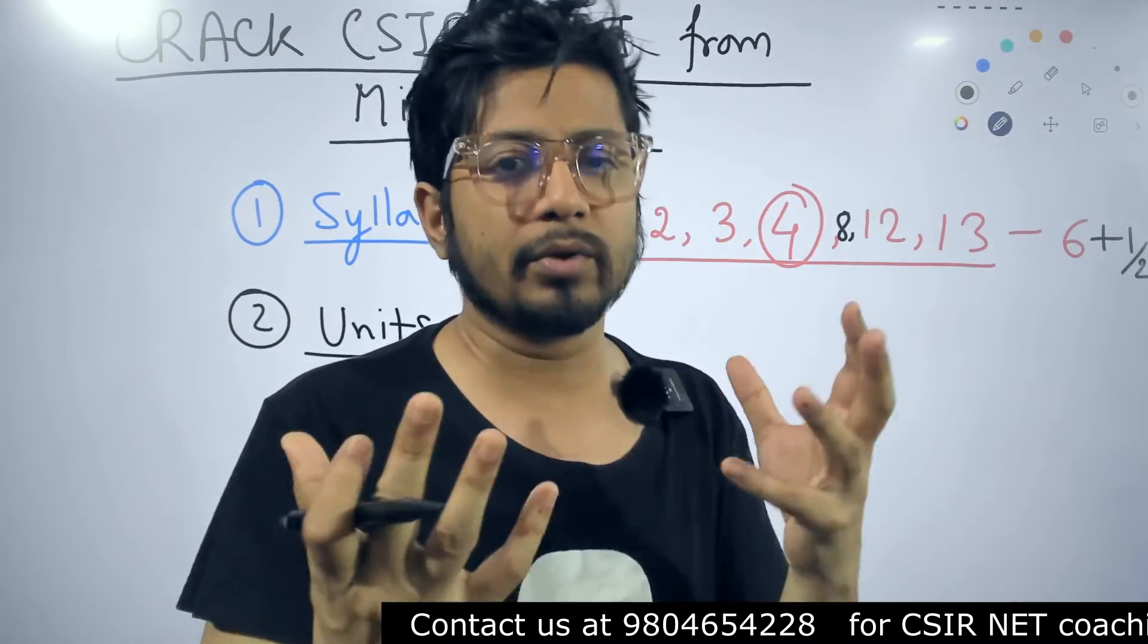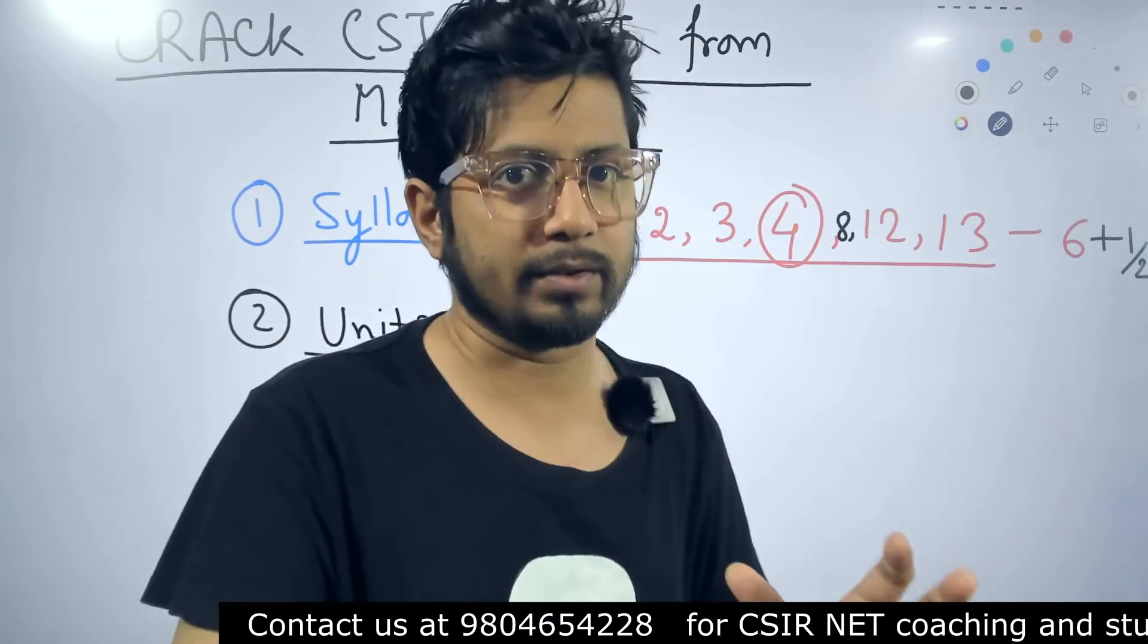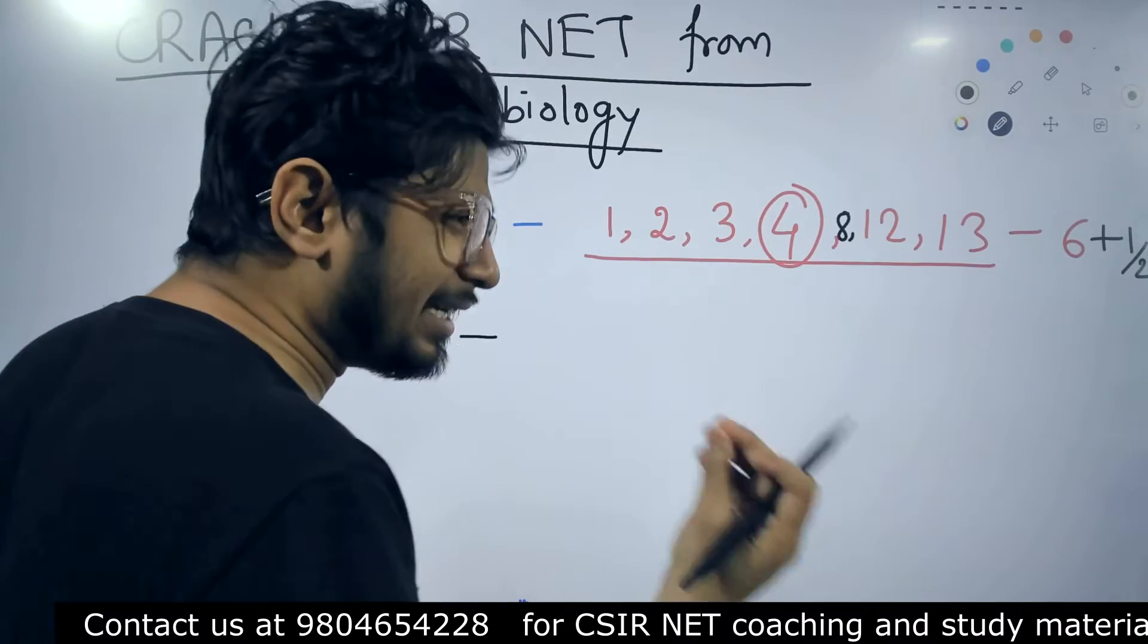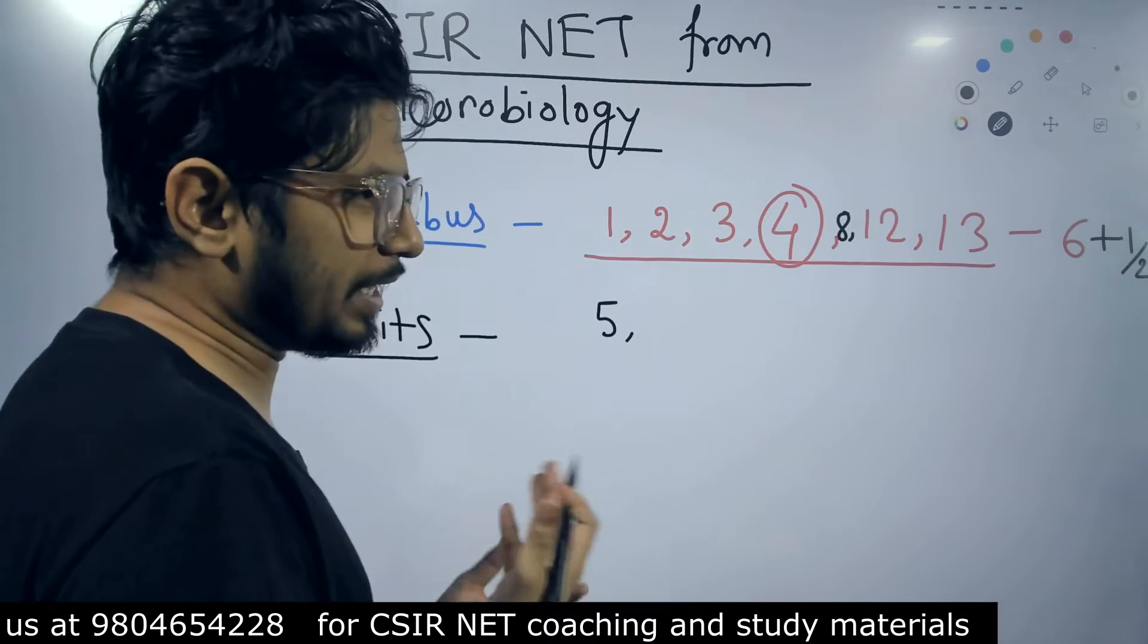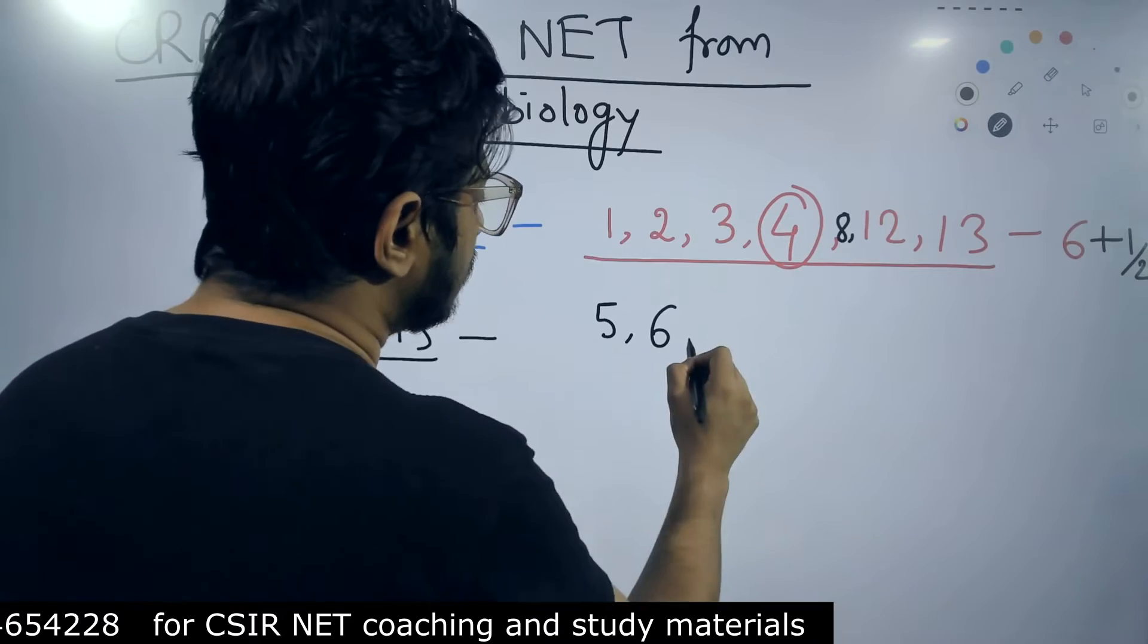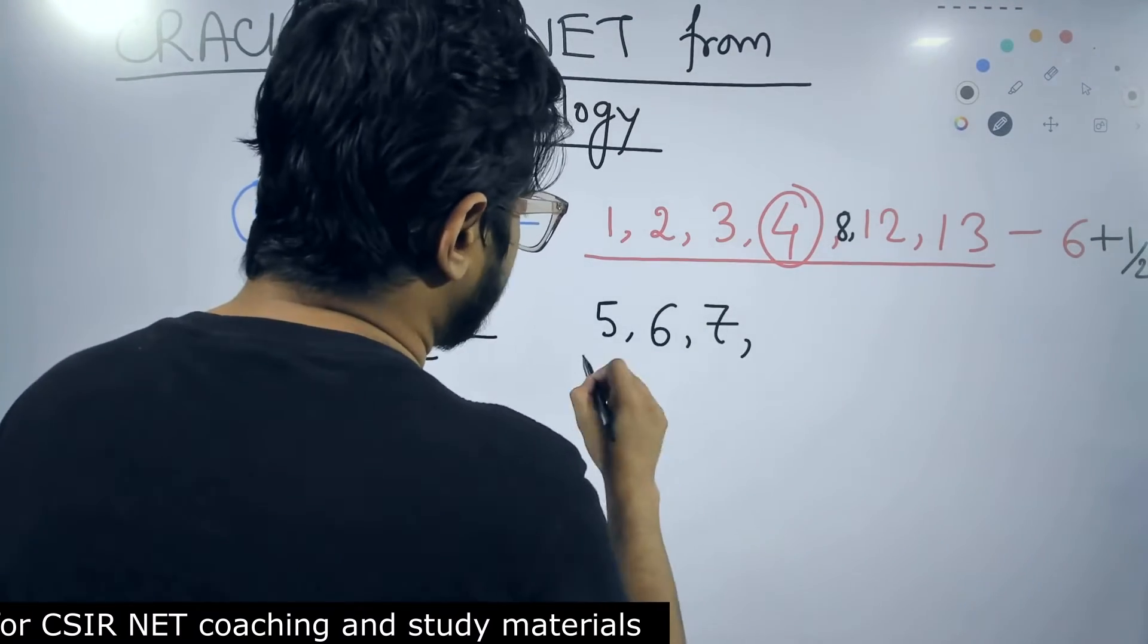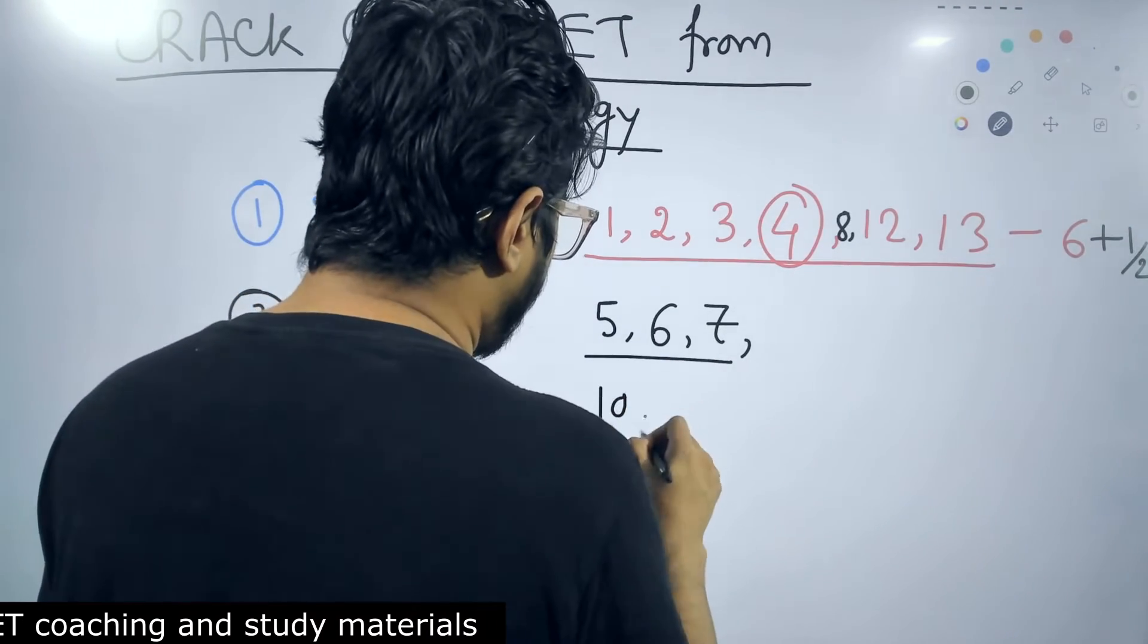So the units that you can work a little more to clear and prepare would be Unit 5, because mostly cell biology is involved with developmental biology aspects, and plant physiology and animal physiology. So these are the three units that you can prepare.